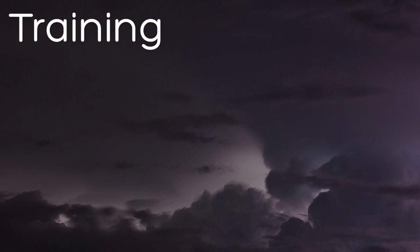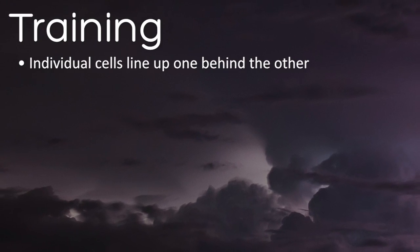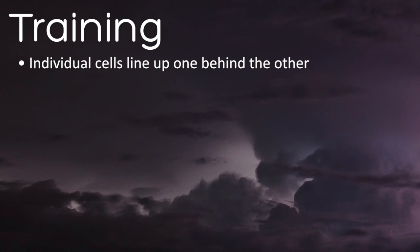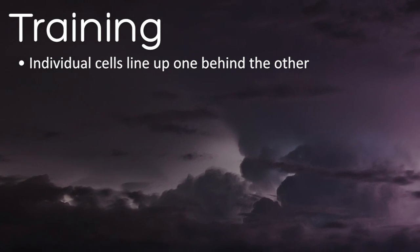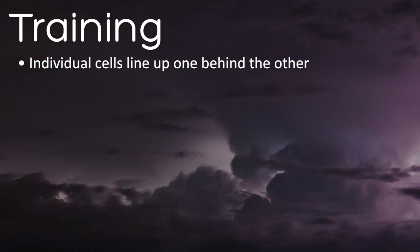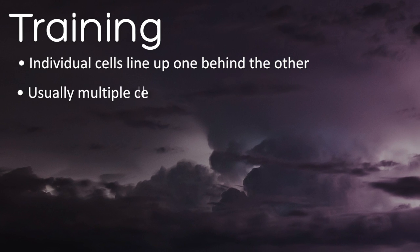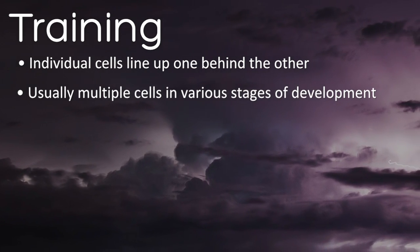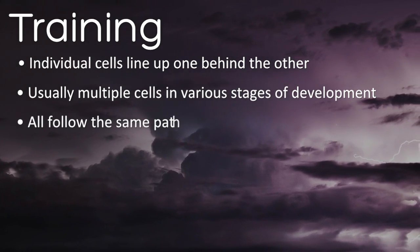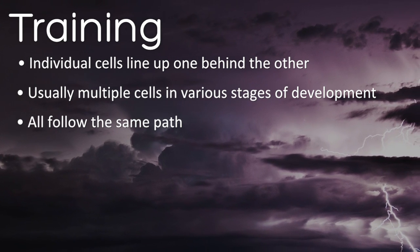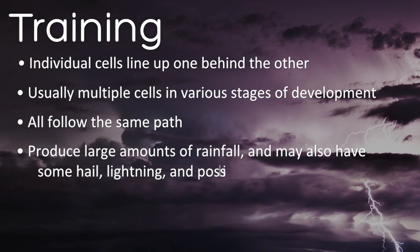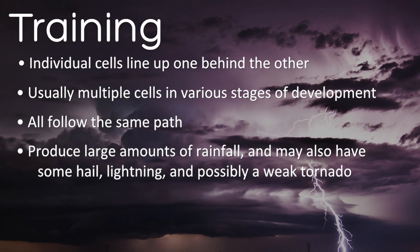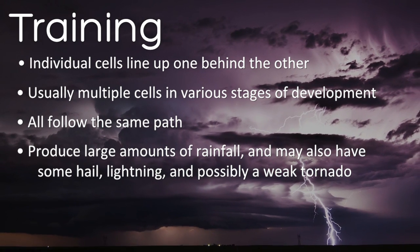Training thunderstorms occur when individual cells line up one behind the other. This occurs when one cell matures and air currents create a new cell behind it. There are usually multiple cells in various stages of development, but they all follow the same path. These storms can produce large amounts of rainfall and may also have some hail, lightning, and possibly a weak tornado.